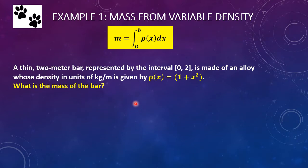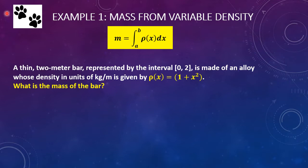This is a pretty simple problem. Remember rho — the little p-looking figure — represents density, so the mass equals the integral over the interval of the density dx. Try this problem: a thin 2-meter bar represented by the interval [0, 2] is made of an alloy whose density in kilograms per meter is given by rho of x equals 1 plus x squared. What is the mass of the bar? Go ahead and hit pause now and try this problem, then hit play when you're finished to check your answer.